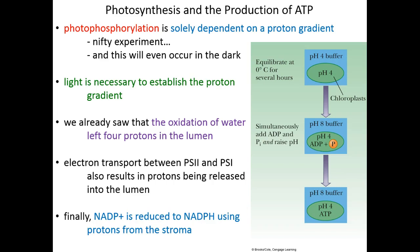And finally, when we reduce NADP plus to NADPH, we needed protons for that reduction, and those protons came from the stroma. Much like we contribute to the proton gradient in the mitochondria when we reduce CoQ and water or oxygen, so too are we contributing to the gradient here when we reduce NADP plus.